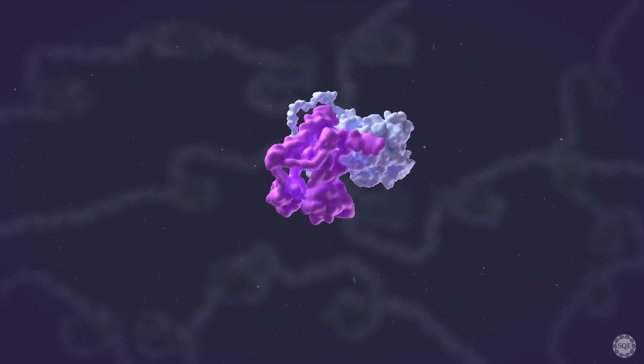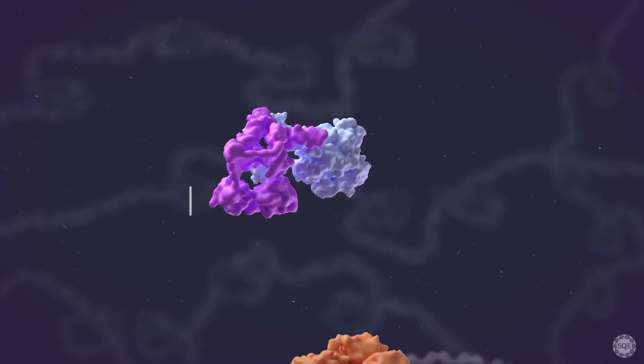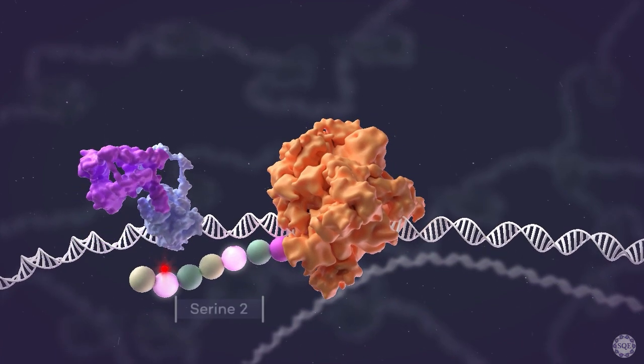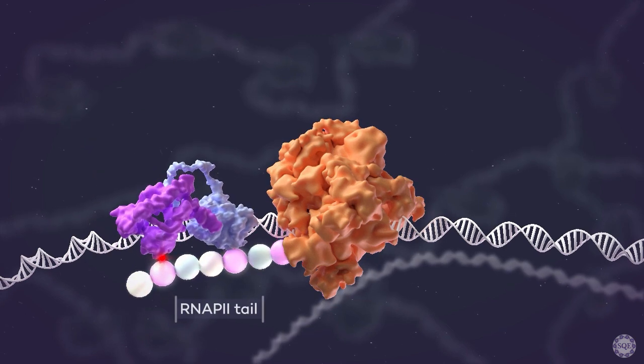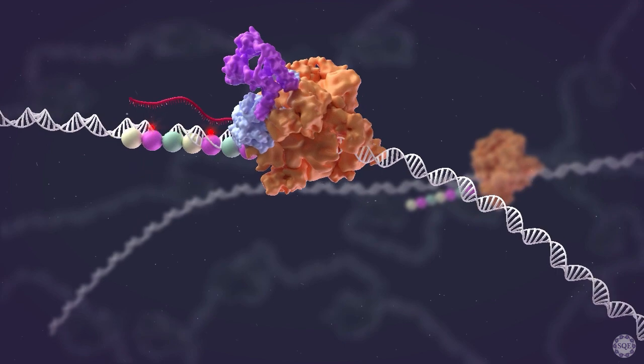PTEFB is found in a large number of complexes, one of which is BRD4. BRD4 recruits PTEFB to phosphorylate serine II on the RNA polymerase II tail to trigger pause release and transcriptional elongation.